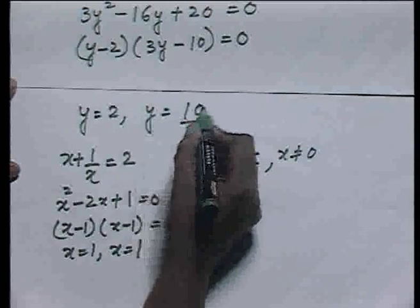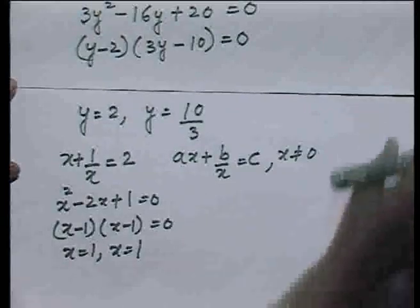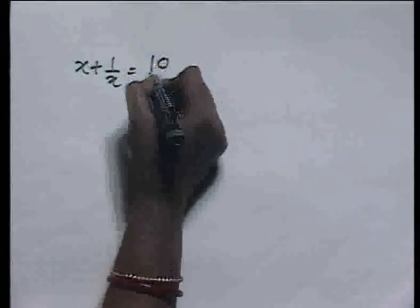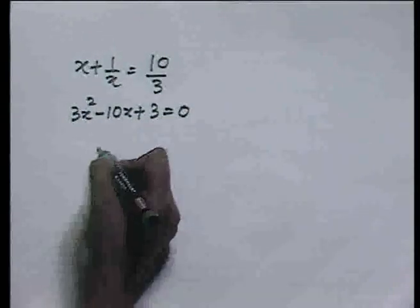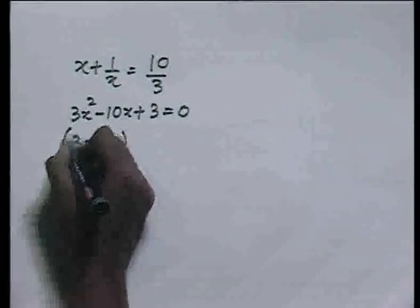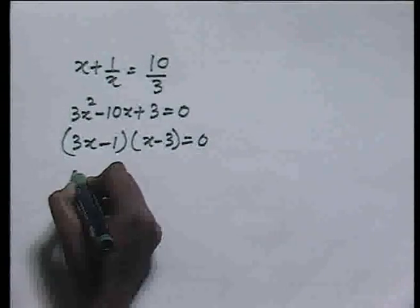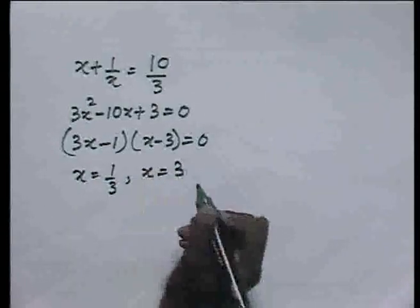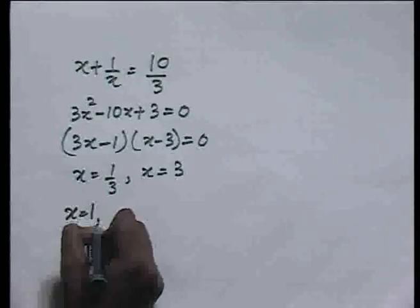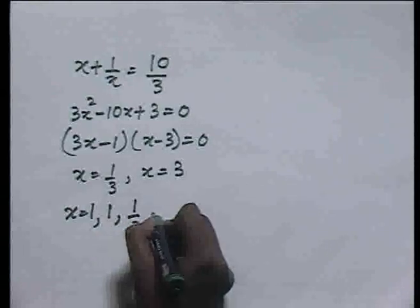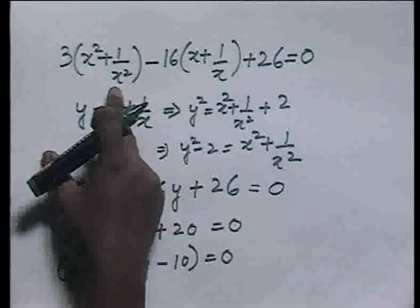Also, when we replace y with x + 1/x for the second value, we get x + 1/x = 10/3, and this equation becomes 3x² - 10x + 3 = 0. The factors are (3x - 1)(x - 3) = 0, and hence we get x = 1/3 and x = 3. So we get four solutions: x = 1, x = 1, x = 1/3, and x = 3. This is because the original equation is biquadratic, and hence it has four solutions.